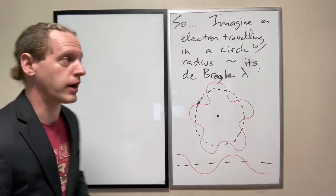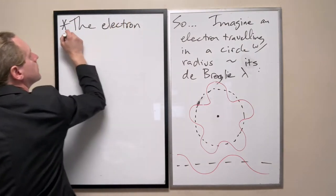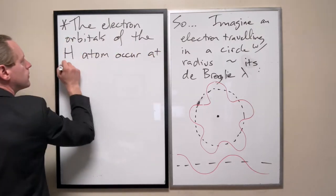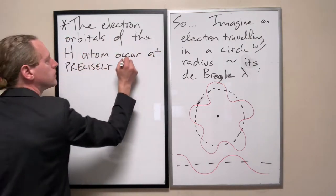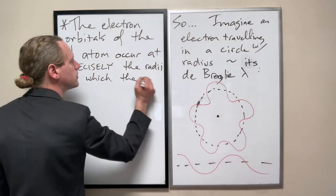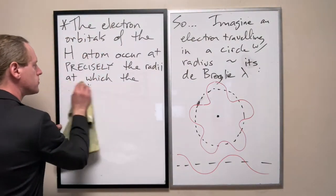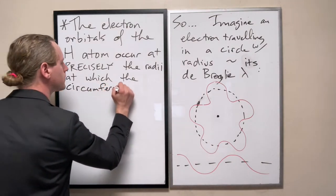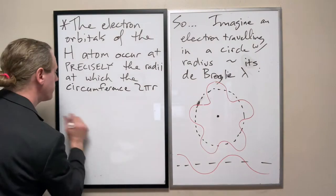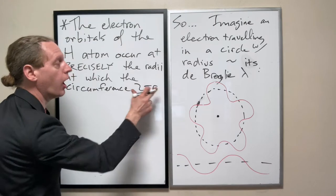And that's the heart of the Bohr model. The circumference is 2πr, at which the circumference is an integer multiple of the de Broglie wavelength.